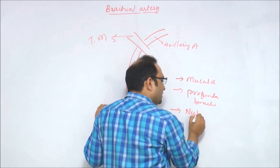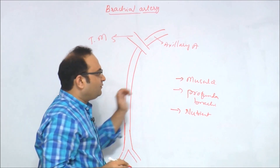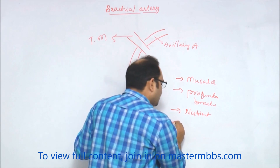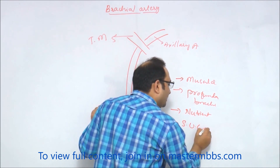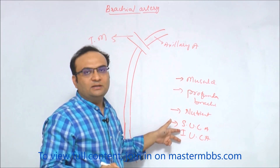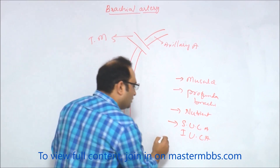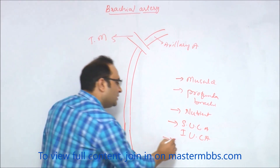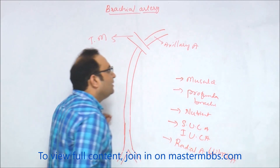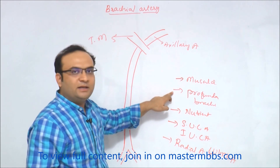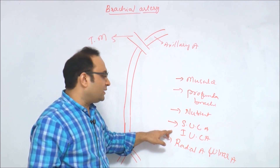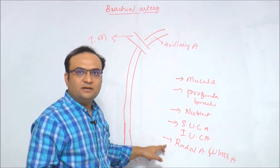The brachial artery also gives a nutrient artery to the humerus, a superior ulnar collateral artery, and an inferior ulnar collateral artery. These two collateral arteries are involved in the anastomosis around the elbow joint. So the branches of the brachial artery are: muscular branches, profunda brachii artery, nutrient artery, superior ulnar collateral artery, inferior ulnar collateral artery, and the terminal branches — radial artery and ulnar artery.